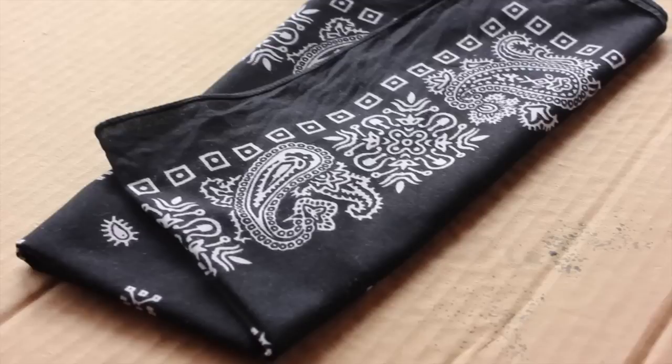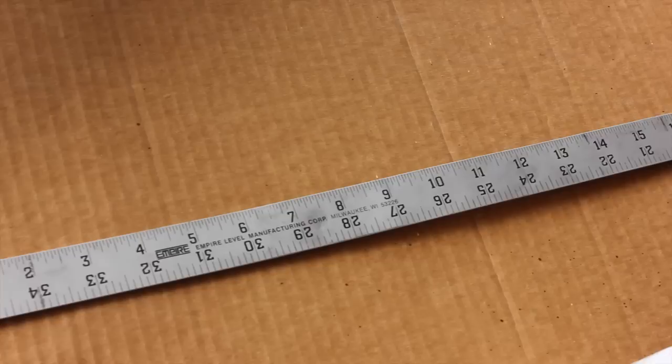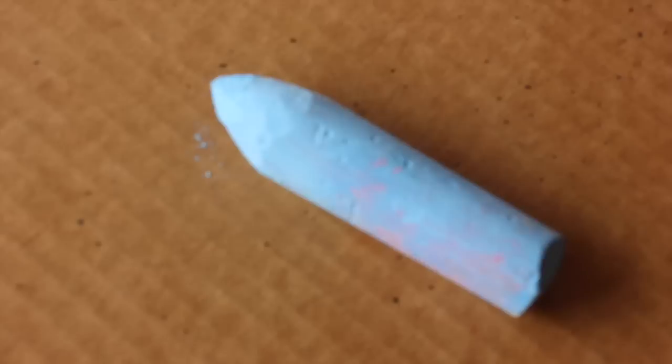To make your bow tie, you're going to need a bandana, a pair of scissors, an alligator clip, Aileen's no sew fabric glue, and Aileen's fast grab tacky glue. You'll also need a ruler and some chalk.